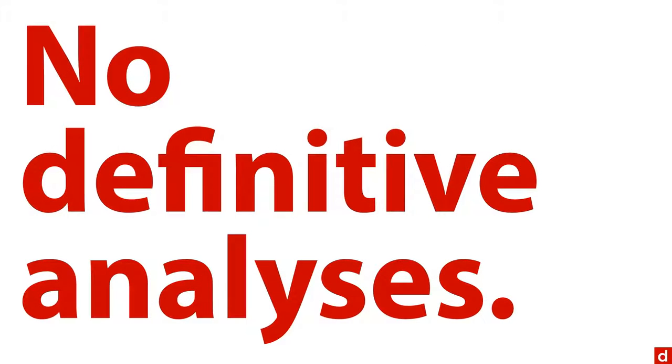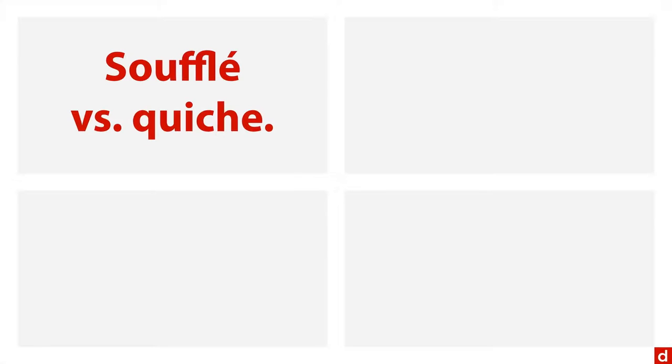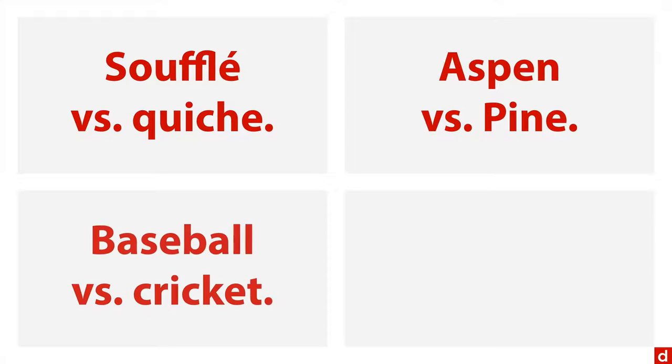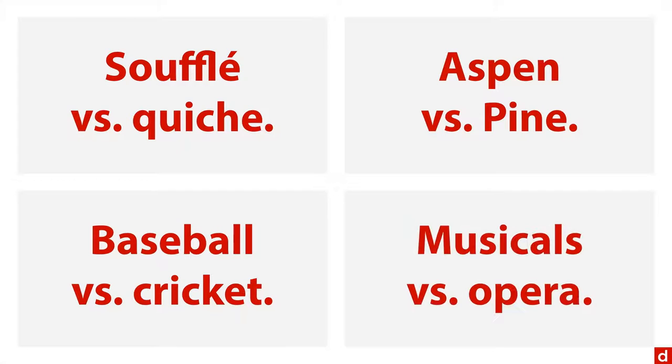And part of the problem is there's no such thing as a definitive analysis. All analyses really depend on the purposes that you're dealing with. So as an example, let me give you a couple of pairs of words and try to summarize the difference between them in just two or three words. How is a souffle different from a quiche? Or how is an aspen different from a pine tree? Or how is baseball different from cricket? And how are musicals different from opera? It really depends on who you're talking to, it depends on your goals, and it depends on the shared knowledge. And so there's not a single definitive answer.